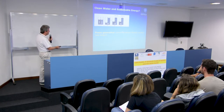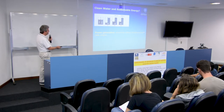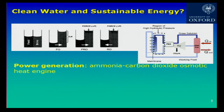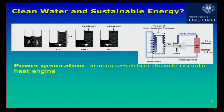One draw solution used for power generation is ammonia-carbon dioxide, which has been used to develop an osmotic heat engine. You have the working fluid as the feed solution, the draw solution circulating on the other side. Water moves through as in forward osmosis, but this is constrained to build high pressure, which is released through a turbine to do work. The draw solution is then regenerated using low-grade heat and sent back into the loop. This device can generate energy entirely, or we can also remove some clean water — depending on what you want to do.